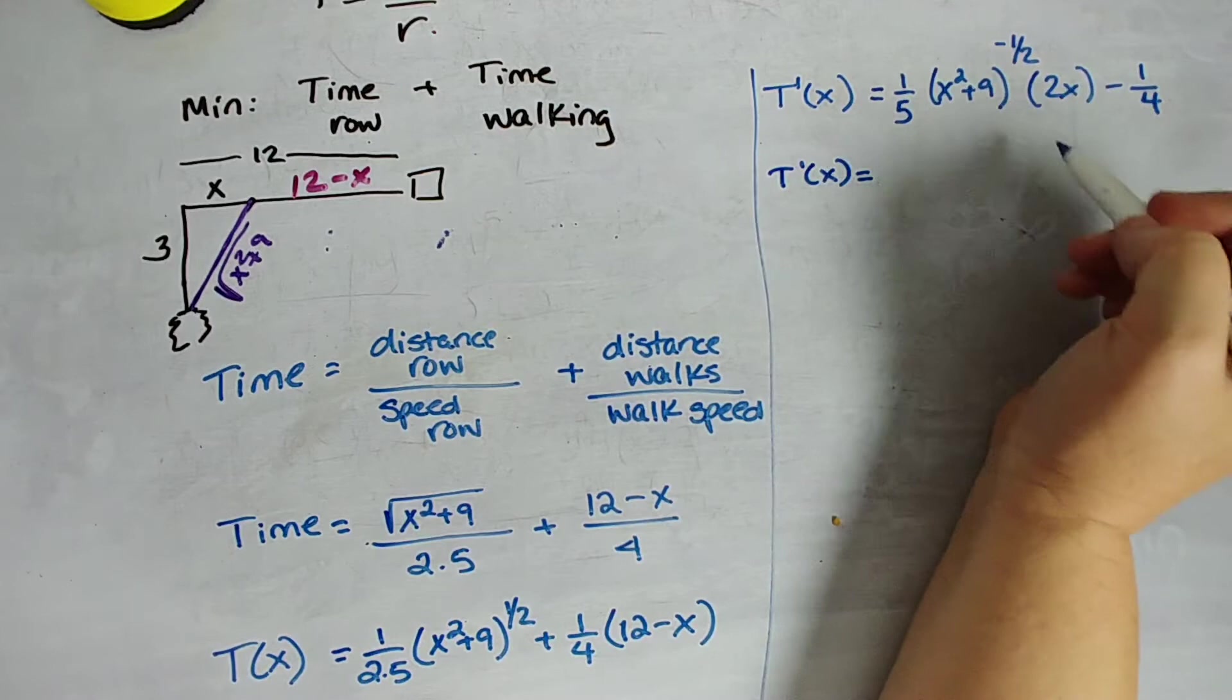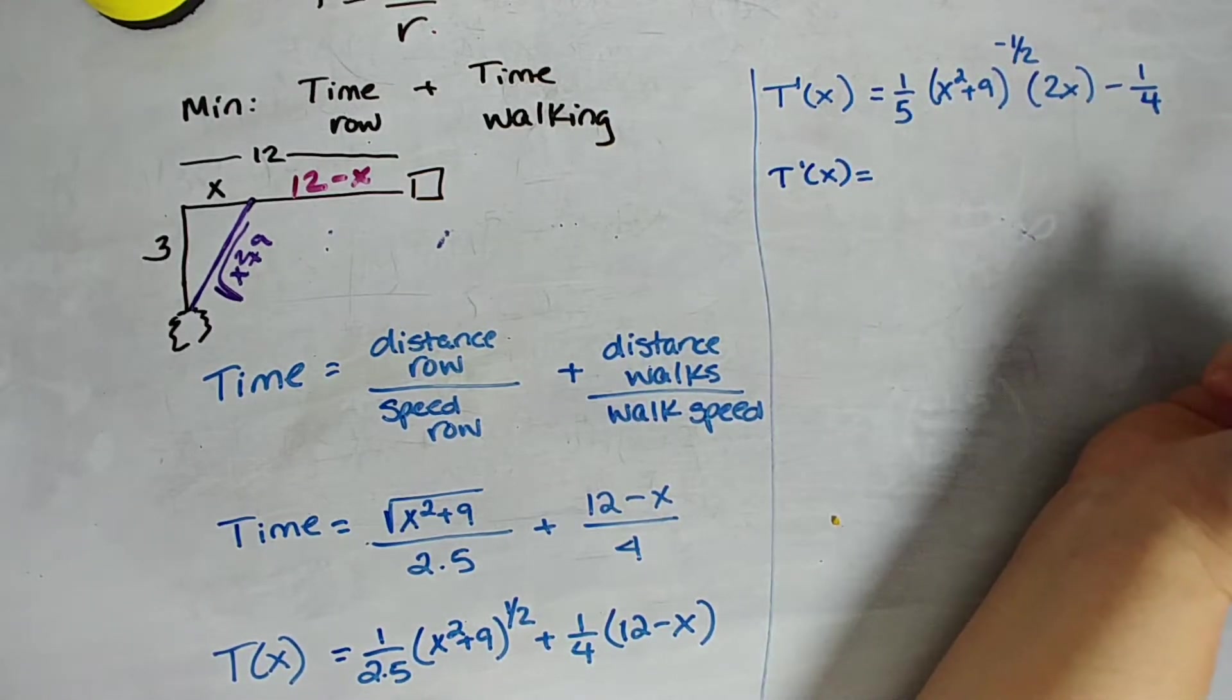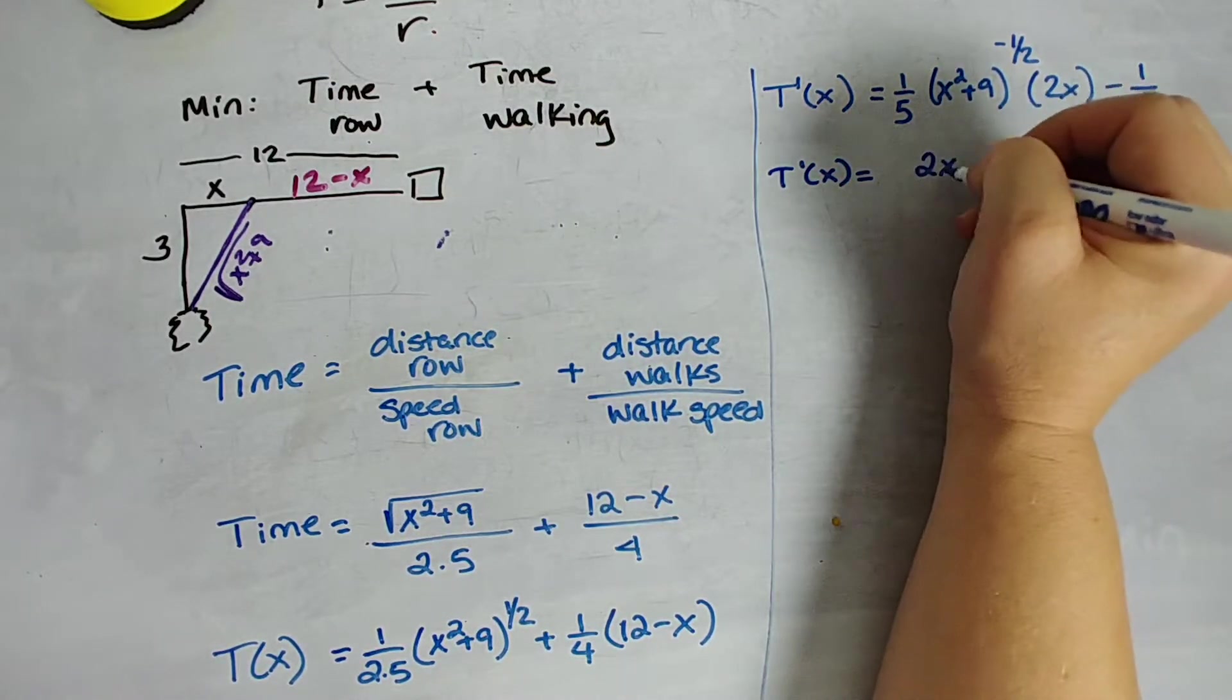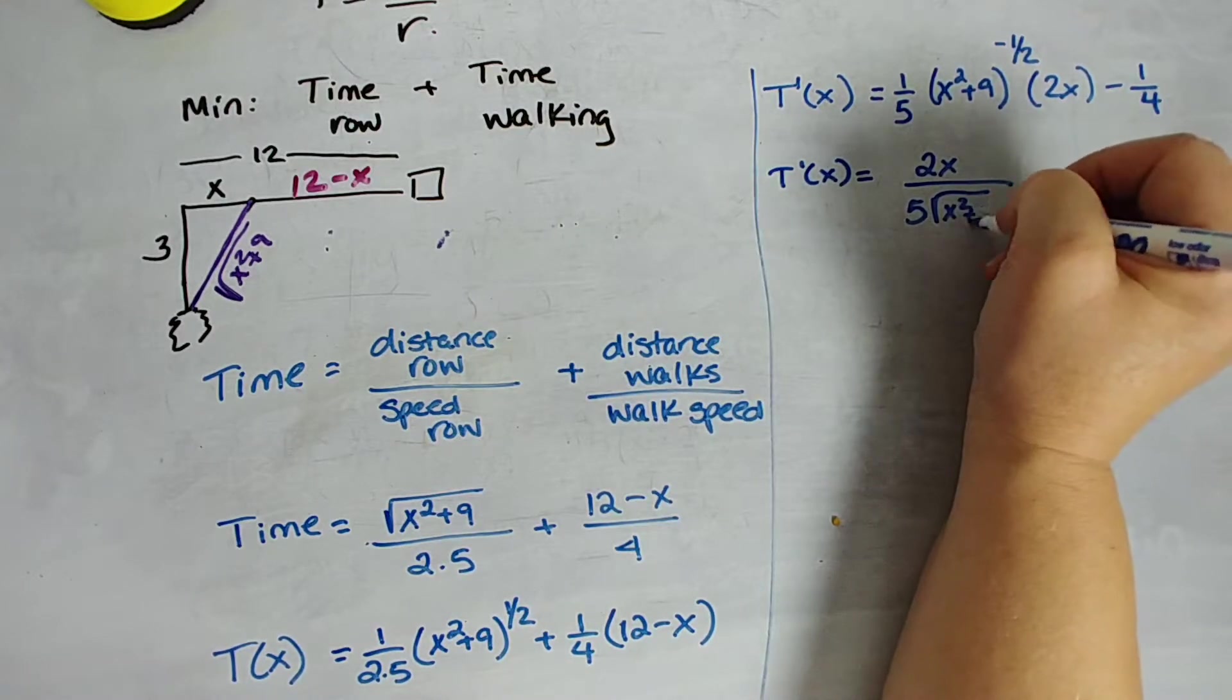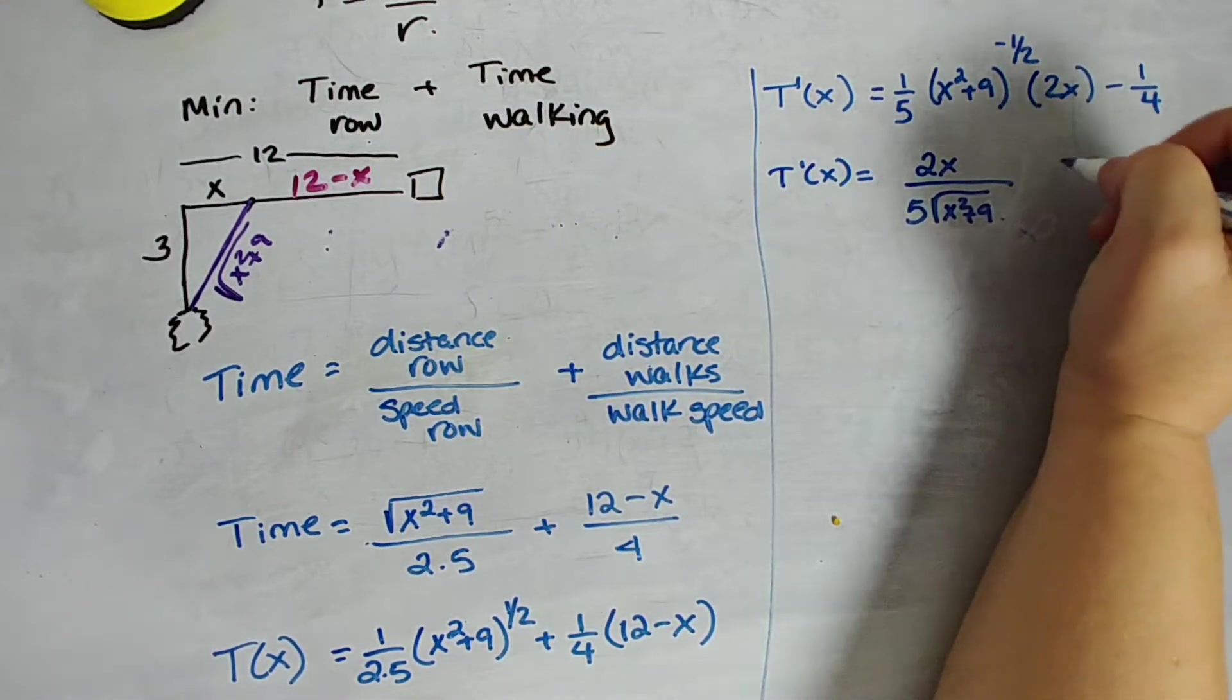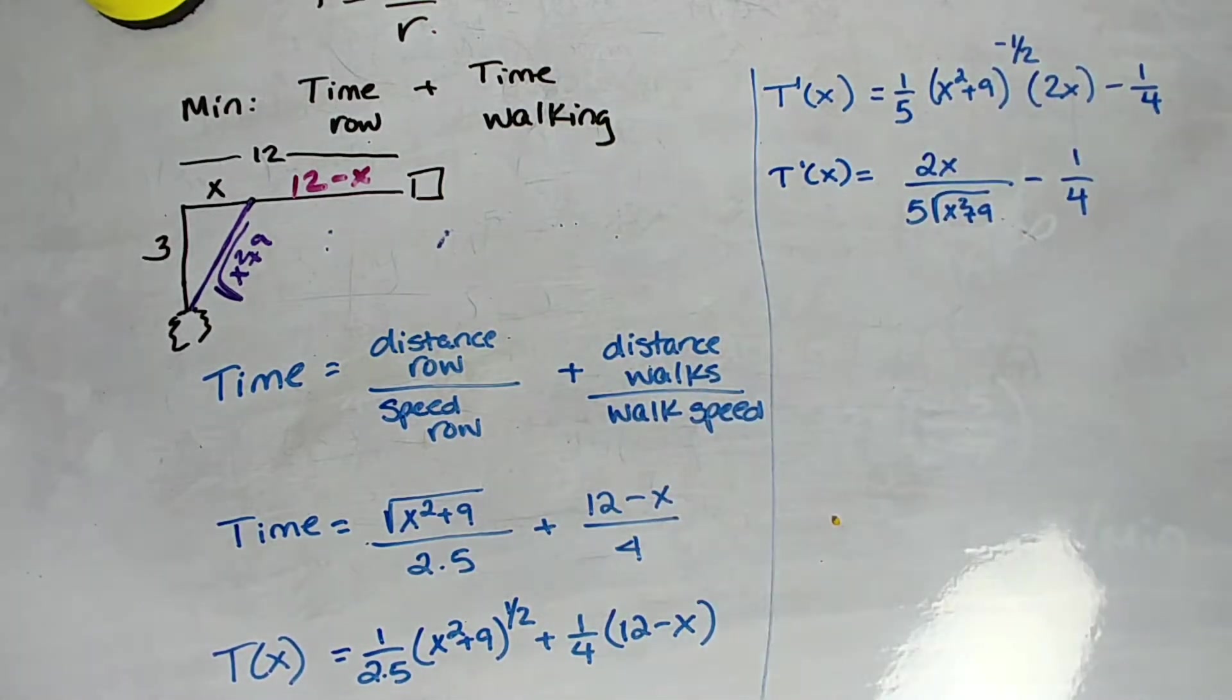So, and then we have over here, so 1 fourth times 12, that's going to be 3, and the derivative of 3 is 0, and the derivative of a constant is 0, and then 1 fourth times negative X. So we're going to have minus 1 fourth as the derivative there. So I think that's okay so far. It's not great. Let's clean this up a little bit more. So T prime of X, let's say we've got 2X over 5, let's bring that back down to the numerator.